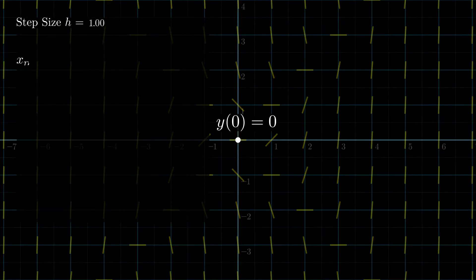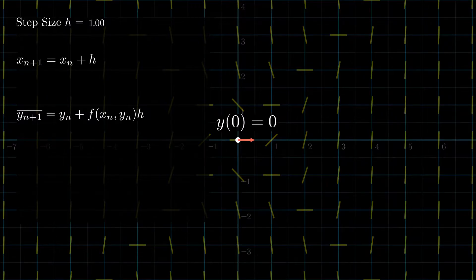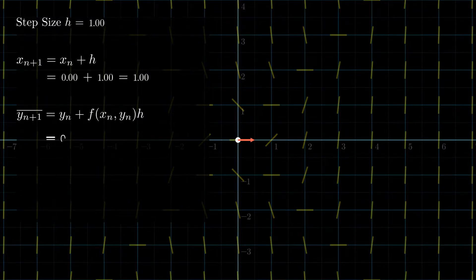So we perform the same steps as we did in Euler's method. That is, assume the solution is linear and extend the line with a slope given by the differential equation. But note that I've added a bar over y, which is to indicate that this is not the solution.